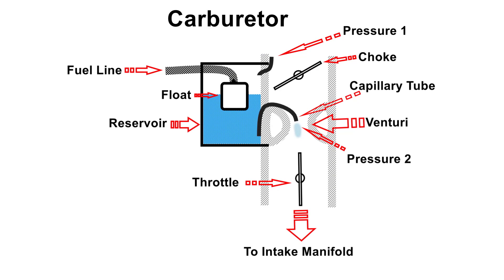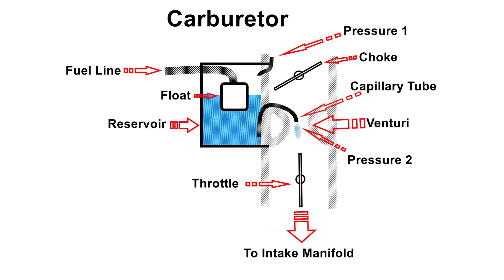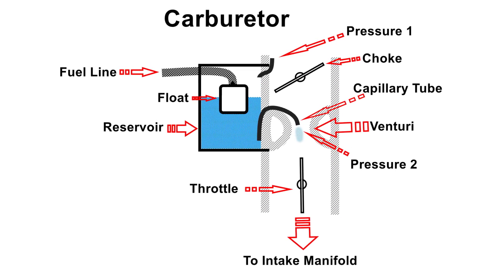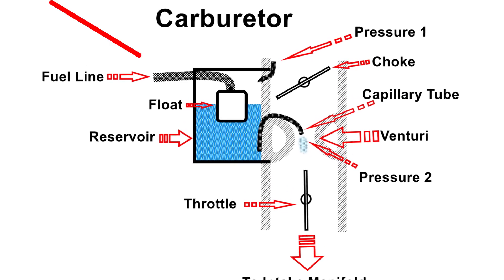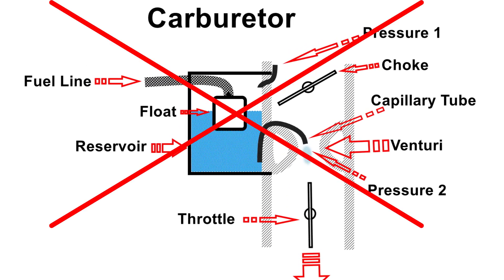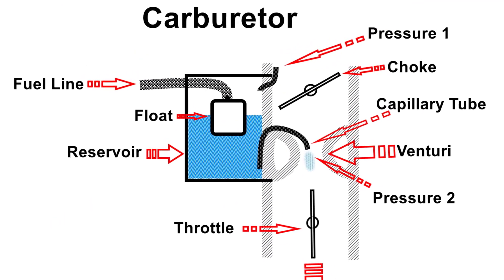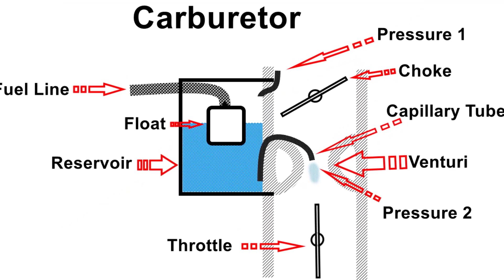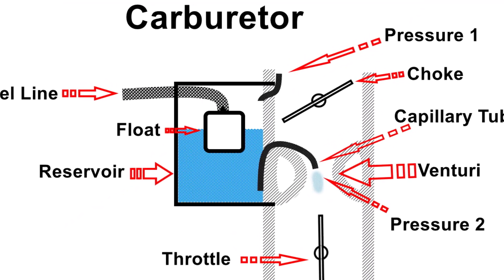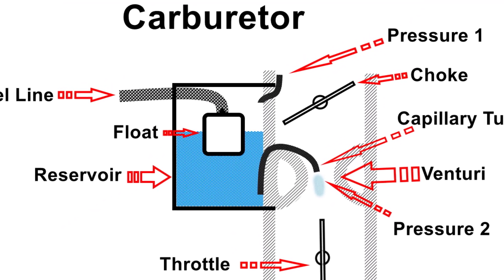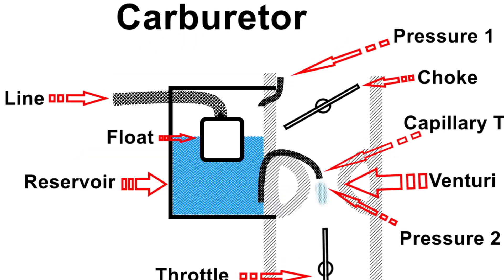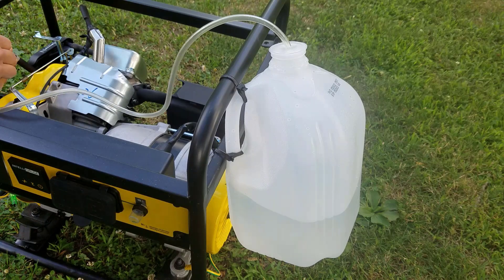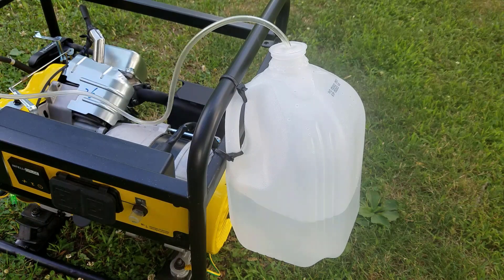My conclusion is that if the carburetor is not modified to run specifically on HHO, the engine will not work. But there's one popular video that claims that an engine can run on HHO without modifying the carburetor. How did they do that? Well, I have my version of that answer.